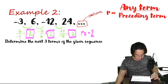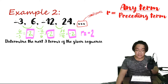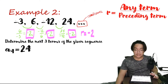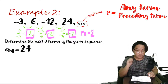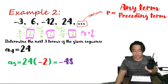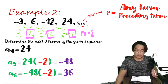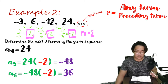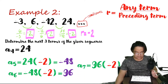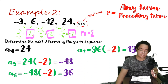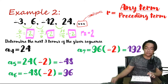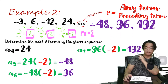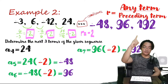Since our r is equal to negative 2, we can get the next term by simply multiplying the fourth term with the common ratio negative 2. So that's 24. The fifth term is 24 times negative 2, which gives us negative 48. The sixth term is negative 48 times negative 2, which is equal to positive 96. And the seventh term is 96 times negative 2, which is equal to 192. So therefore, the next 3 terms are negative 48, positive 96, and 192.